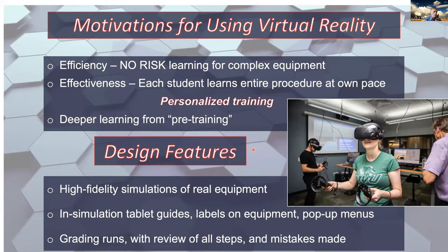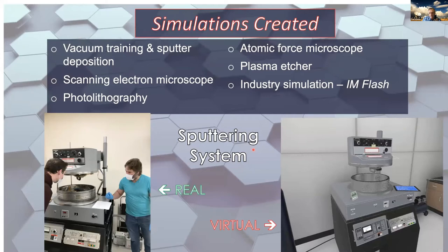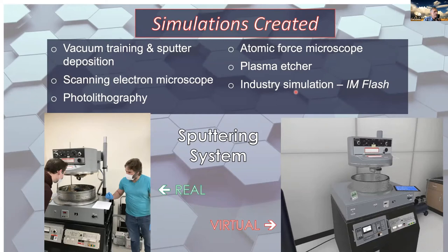The simulations we've produced so far include a vacuum training and a sputter deposition simulation — Nancy at Normandale Community College will be talking about this shortly. We wanted just enough vacuum training so students could run nanotechnology equipment safely without destroying anything like a turbo molecular pump. We also have an electron microscope simulation, a photolithography simulation, an AFM, a plasma etcher, and at the end I'll discuss an idea for potential collaboration with industry.